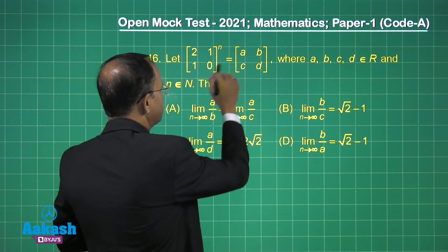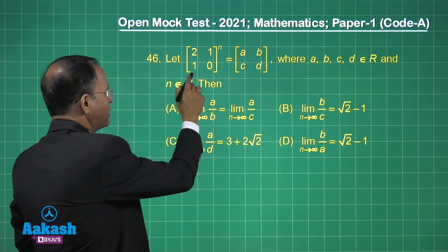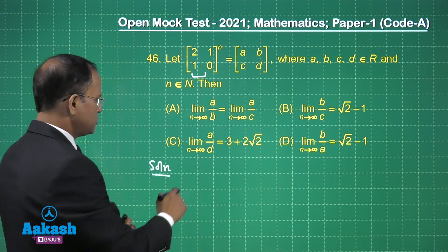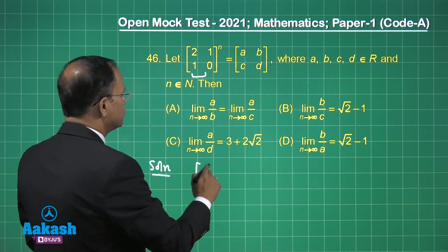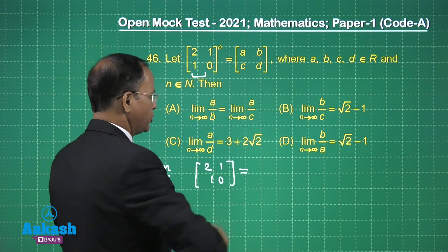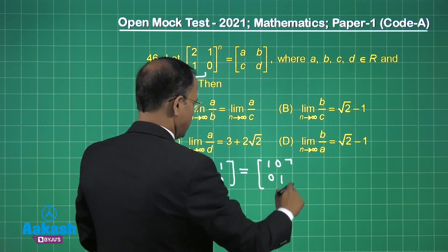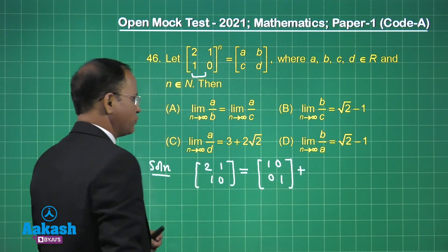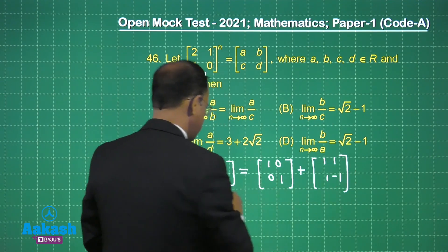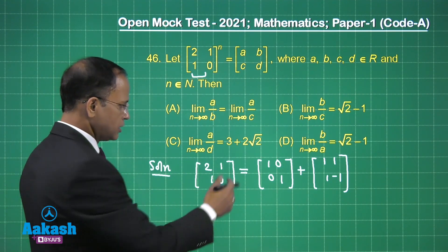The most important thing is the comparison part. We have this matrix [2, 1; 1, 0] and we need to divide it into two different matrices. This is equal to [1, 0; 0, 1] plus [1, 1; 1, -1]. This matrix can be written as the sum of two matrices — these are the two matrices we have.